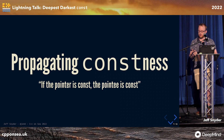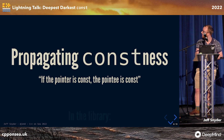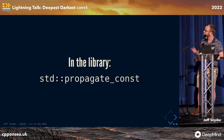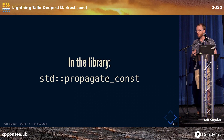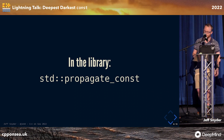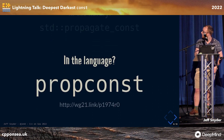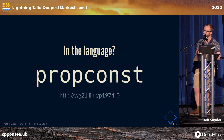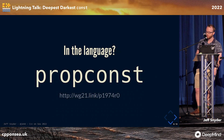The idea is propagating constness. This is actually something that Jonathan Coe tried to add to the standard library with std::propagate_const, which you would template on something like an int star, and it would give you a smart pointer with const propagation. If you try to do something in the language, it looks more like a CV qualifier, and the working name I've got is prop const.